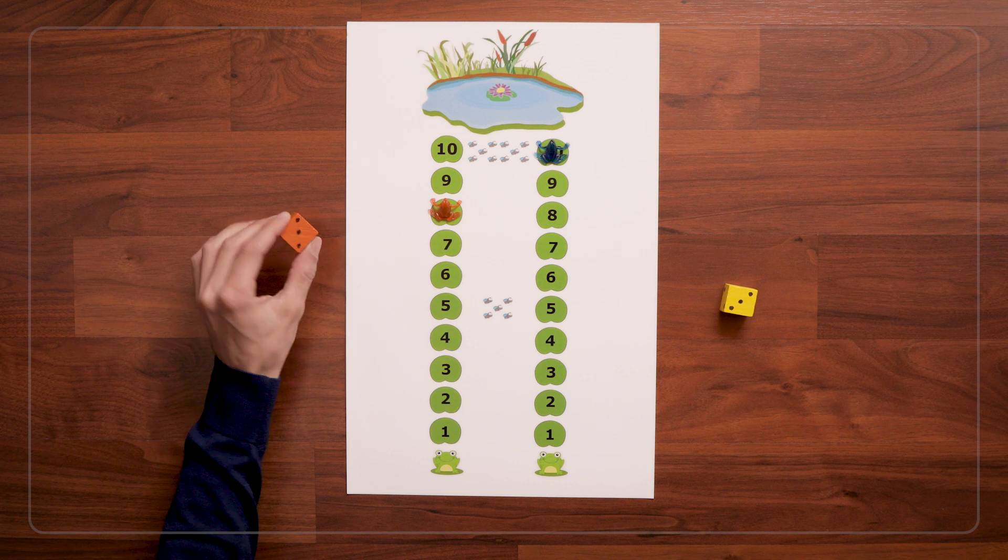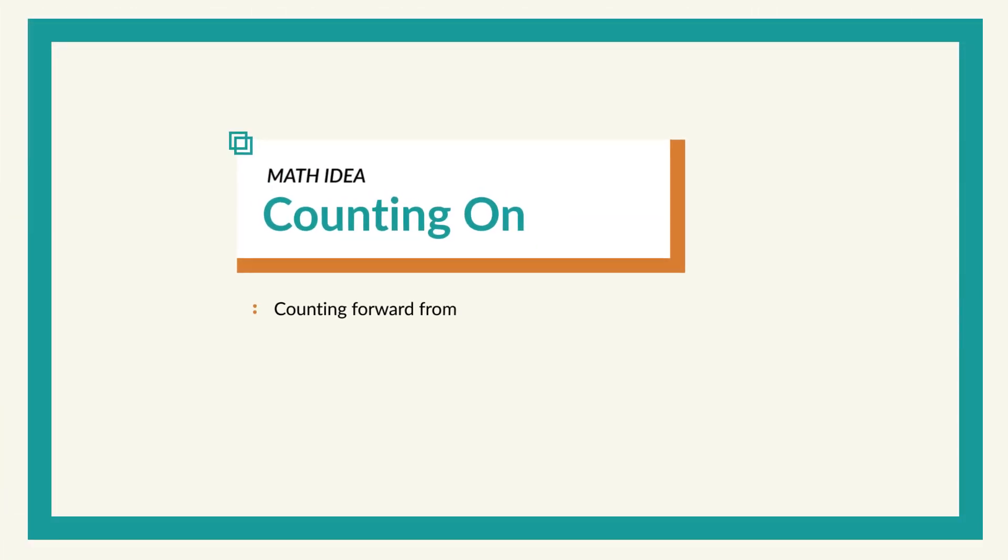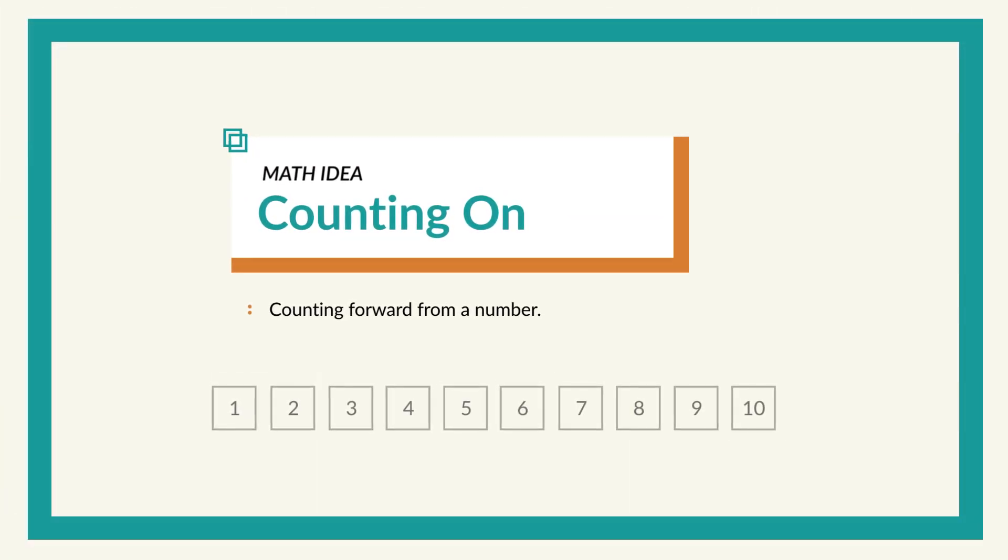When children are ready, the next stage in this game is to practice counting on. Counting on is the idea that if you have, say, 5 plus 3, instead of starting at 1 and counting all the way up to 8, you start at 5 and count on from 5. So 6, 7, 8.